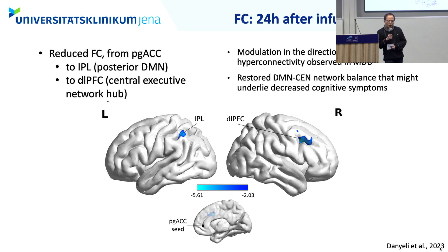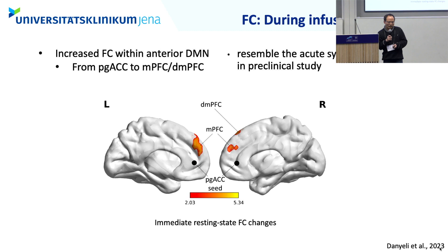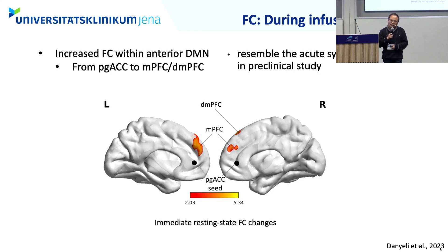With the esketamine study, we also see reduced functional connectivity from PGACC to inferior parietal lobe and dorsal lateral prefrontal cortex 24 hours after infusion. We are also able to observe the transient change during ketamine infusion. Taking the PGACC as a seed, we observed increased functional connectivity from PGACC to medial prefrontal cortex and dorsal medial prefrontal cortex — we see this as a replication of acute synaptic plasticity observed in preclinical studies.